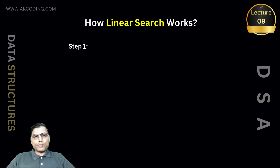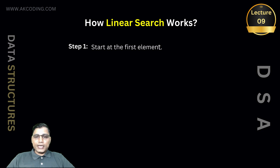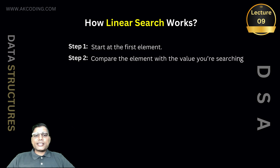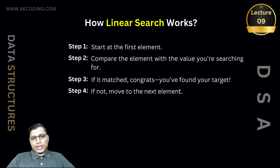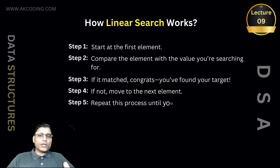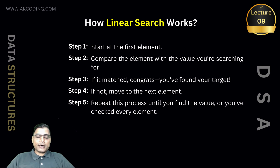Now let's see how it works step by step. Step 1: Start at the first element. Step 2: Compare the element with the value you are searching for. Step 3: If matched, you found your target value. Step 4: If not, move to the next element. Step 5: Repeat this process until you find the value or you have checked every element in the array.